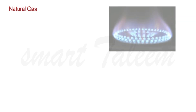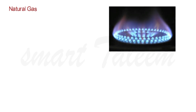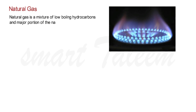Now if we talk about another source of organic compounds — that is natural gas. Natural gas is a mixture of low-boiling hydrocarbons, and the major portion of natural gas is methane. These are more volatile hydrocarbons.